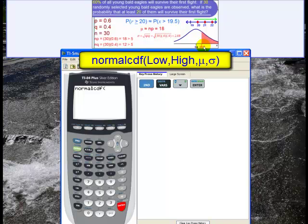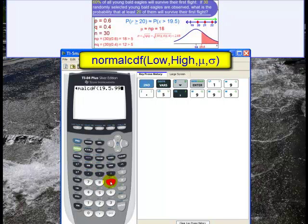The low is 19.5, so 19.5. The high, we're going off to infinity, so I'll use 99999.